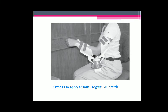Another example of a mechanical stretching device is the JAS orthosis, where the patient is applied a static progressive stretch with the help of the orthosis.